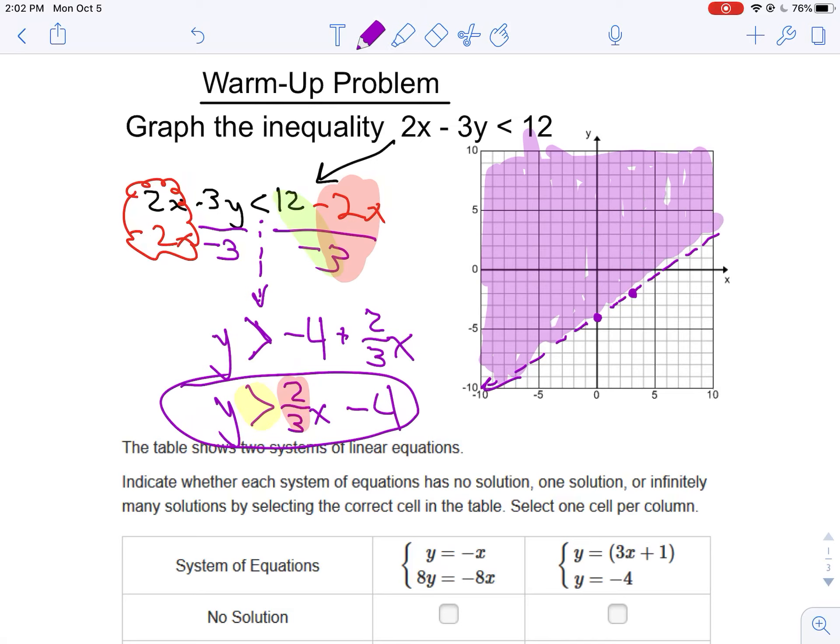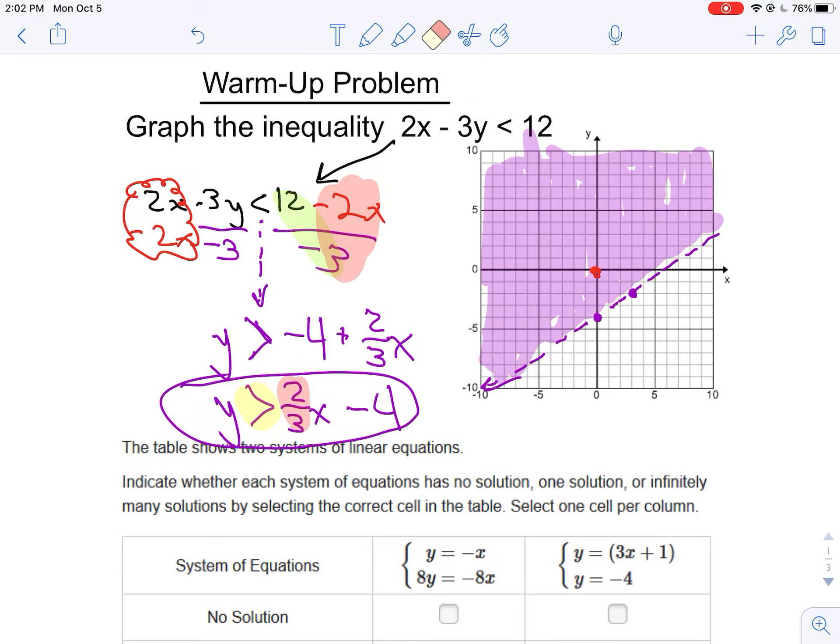Make sense? So when I choose any point, say, if I try, well heck, zero, zero. If I drop zero into the problem, two times zero minus three times zero, that's zero. And zero is less than 12, so it kind of checks out.